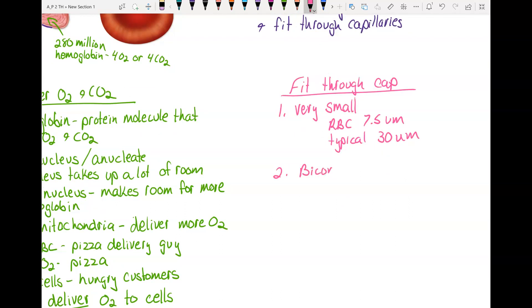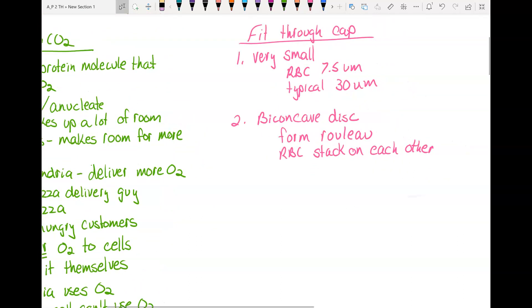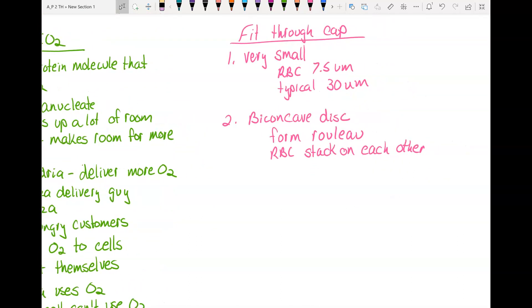That biconcave disc, again, is an important feature. This allows them to form a rouleaux. Take a look in your book. There's a photograph of this in chapter 18. This is where the red blood cells stack on top of each other, kind of like a stack of coins. This way they can squeeze through the capillary without getting tangled up with each other.